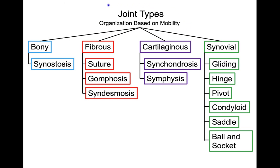The joint types we're going to be looking at are outlined here on this slide. We have our bony joints on the left, fibrous, cartilaginous, and then synovial all the way on the right. These are organized based on their mobility. So the bony joints are immobile and the synovial joints are the most movable. You'll also notice there are going to be some new and confusing terms: synostosis, syndesmosis, synchondrosis, and symphysis. You'll need to spend some time practicing these as they all sound somewhat similar. Make sure you're writing this out or creating some kind of visual study guide that you can tie these complicated terms to.